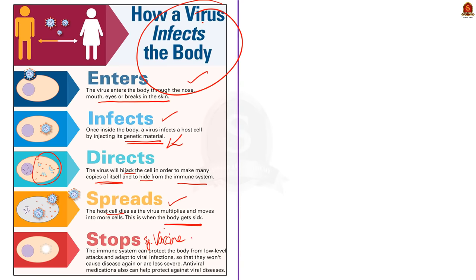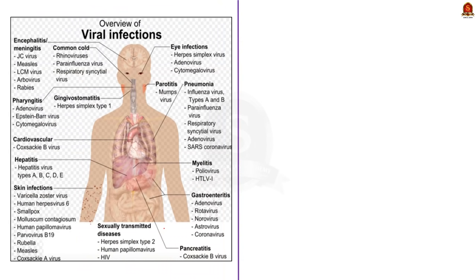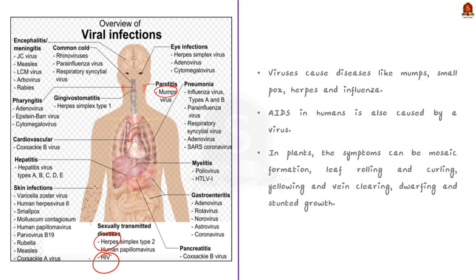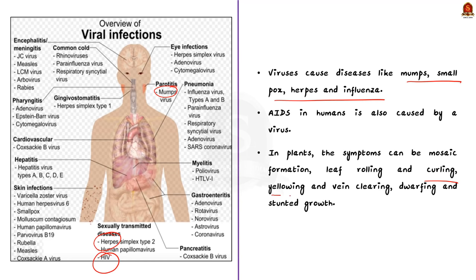Viruses cause several diseases — for example, mumps, smallpox, herpes, influenza, and even AIDS in humans. In plants, symptoms can include mosaic formation, leaf rolling and curling, yellowing, vein clearing, dwarfing, and stunted growth. So far we saw the definition and structure of a virus, and also the way it affects living organisms.